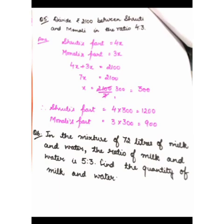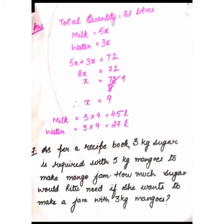Question number 6: In a mixture of 72 litres of milk and water, the ratio of milk to water is 5:3. Find the quantity of milk and water. Total = 72 litres, milk = 5x and water = 3x. So 5x + 3x = 72, meaning 8x = 72, giving x = 9. Milk = 5 × 9 = 45 litres, and water = 3 × 9 = 27 litres.